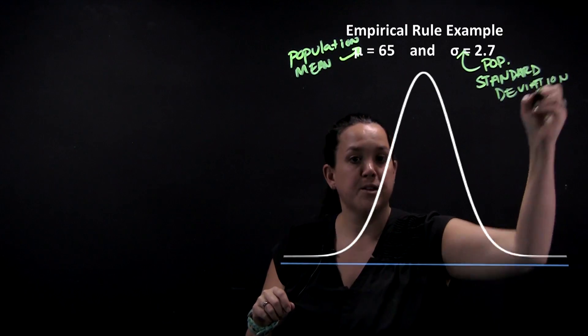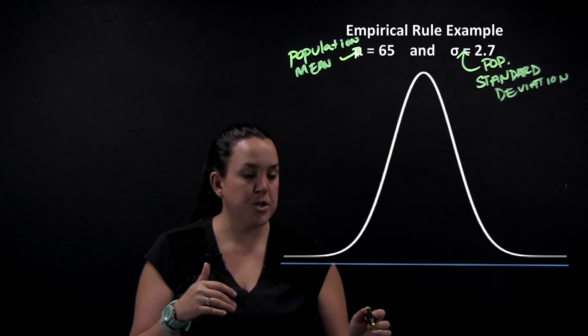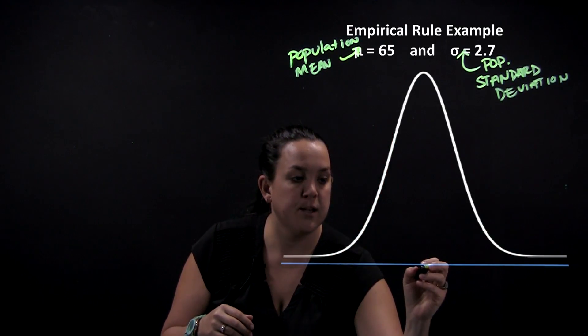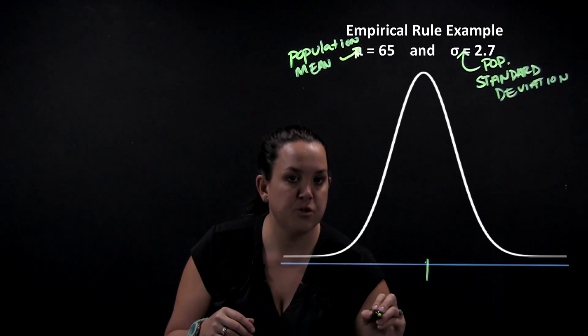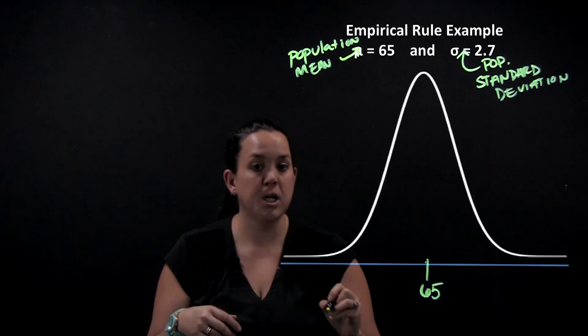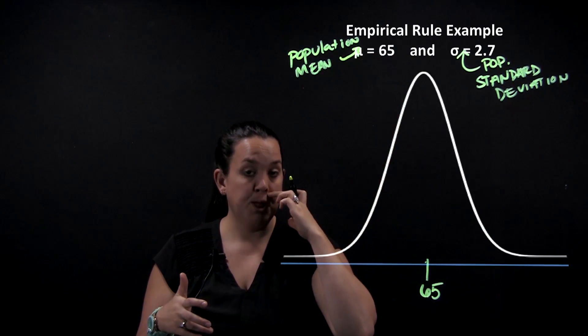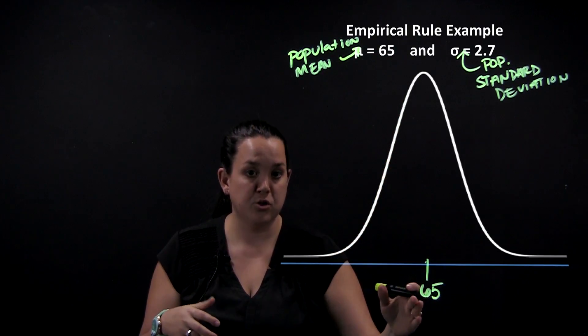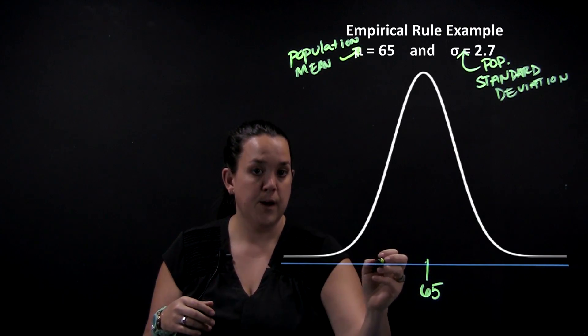So last time we looked at the empirical rule and the calculation for it, recognizing that the center of the distribution is going to be mu or the population mean. So here, because our population mean is 65, the center of our distribution is going to be 65.